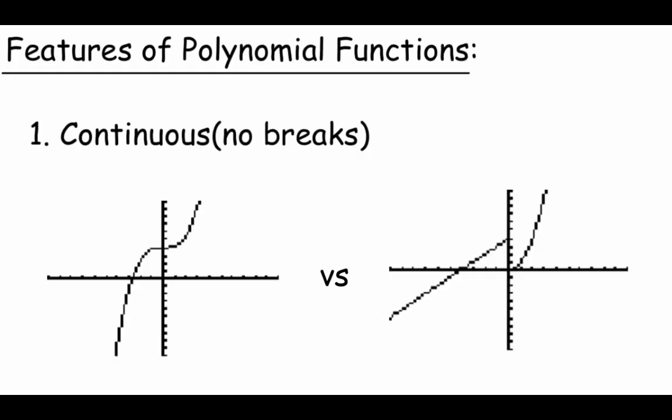When looking at graphs and deciding if they represent a polynomial function, there are really two things we look for. The first thing is we need to make sure that our graph is continuous, meaning it's not going to have any breaks in it. This cubic function has a nice continuous line — no breaks in it, and if we were sketching it out, we wouldn't have to pick up our pencil at all to draw it.